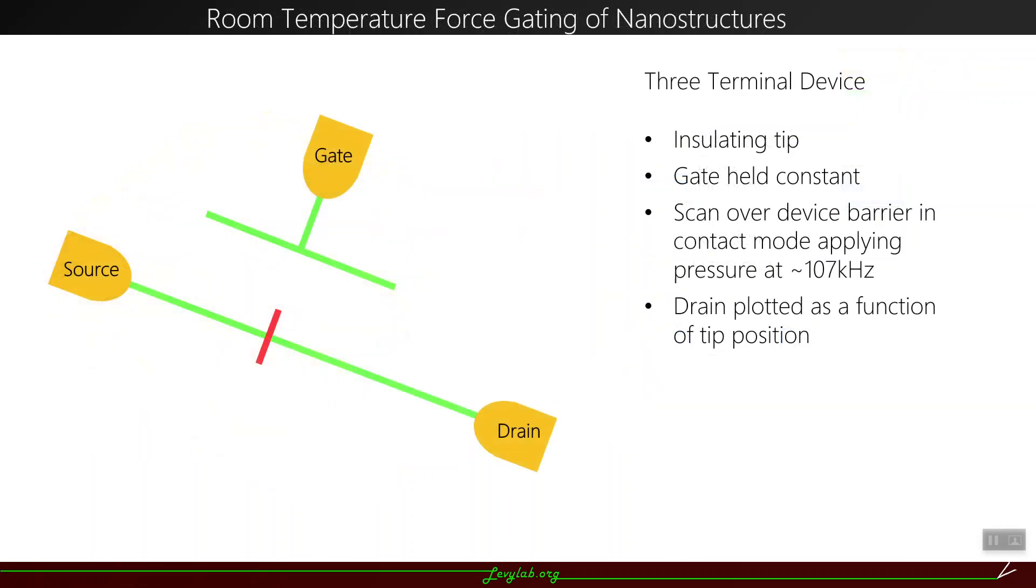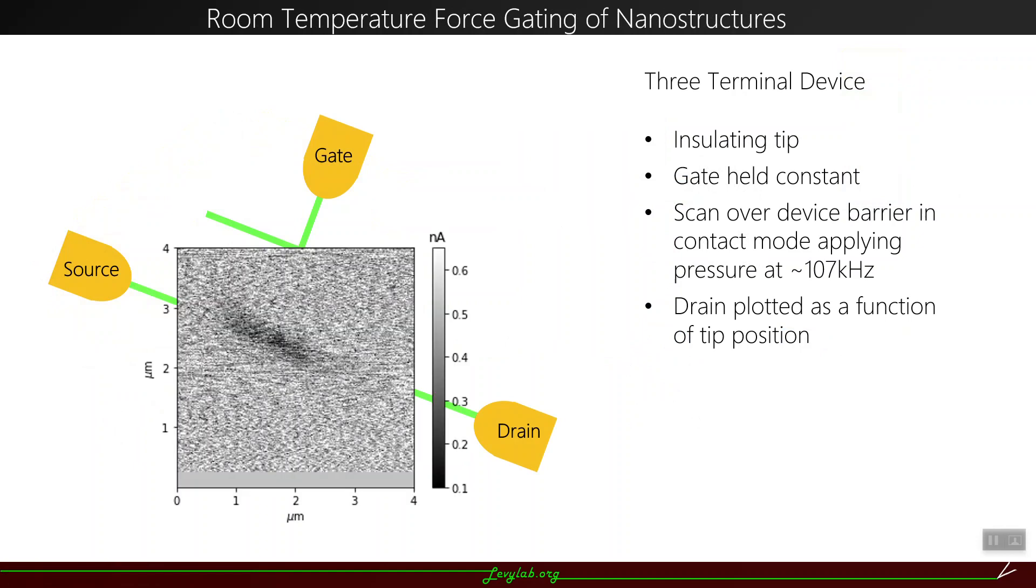We have some preliminary results here. This is a three-terminal device that has an insulating tip, and we held the gate constant. We scanned over the device in contact mode, applying pressure at 107 kilohertz, and we applied the drain current as a function of tip position. You can see as we go over the junction there is a decrease in the drain current. It's pretty well confined to the junction of this device.